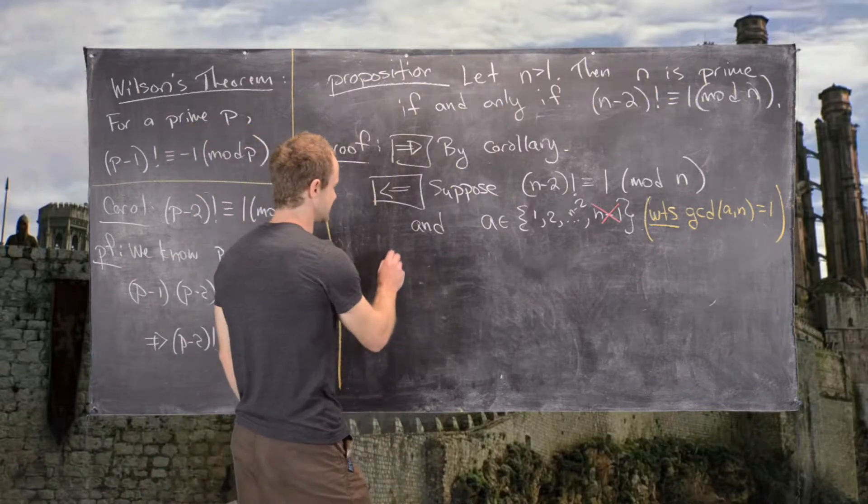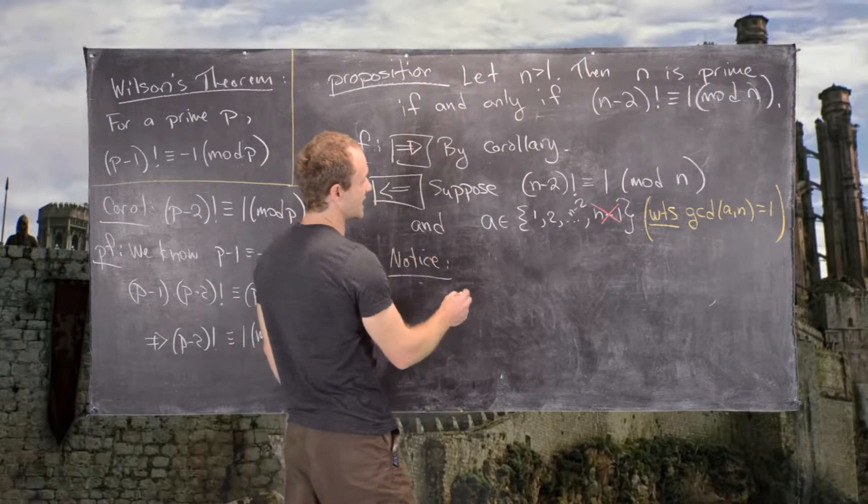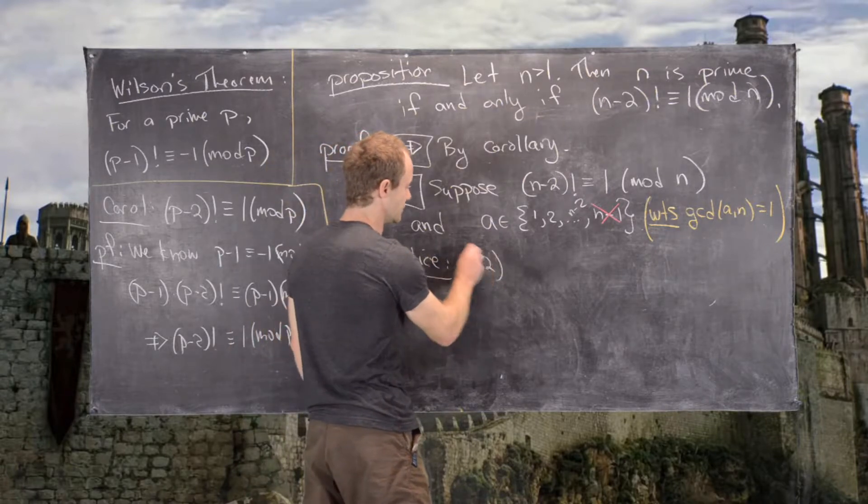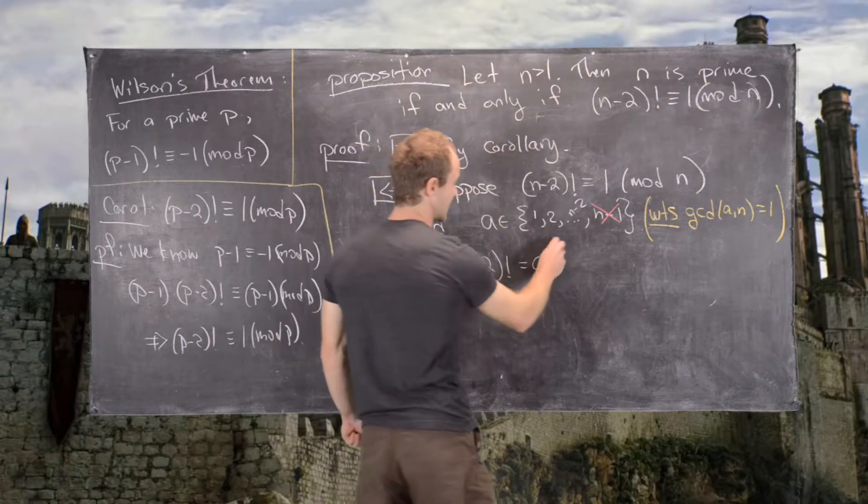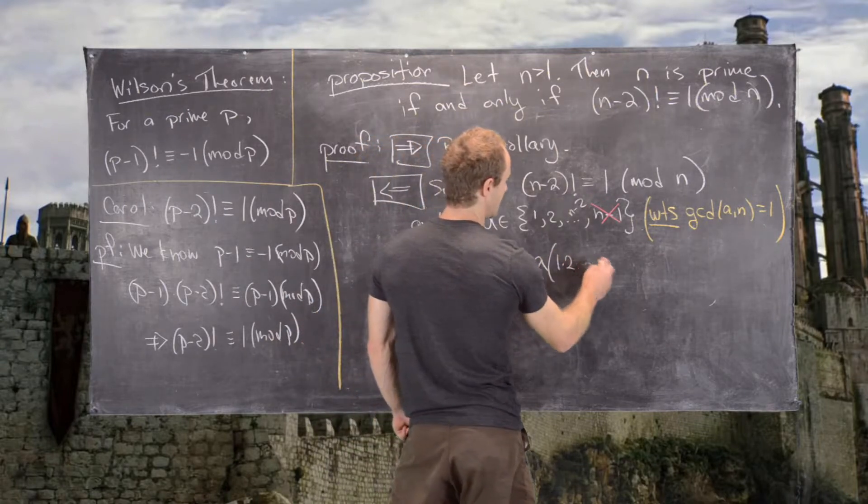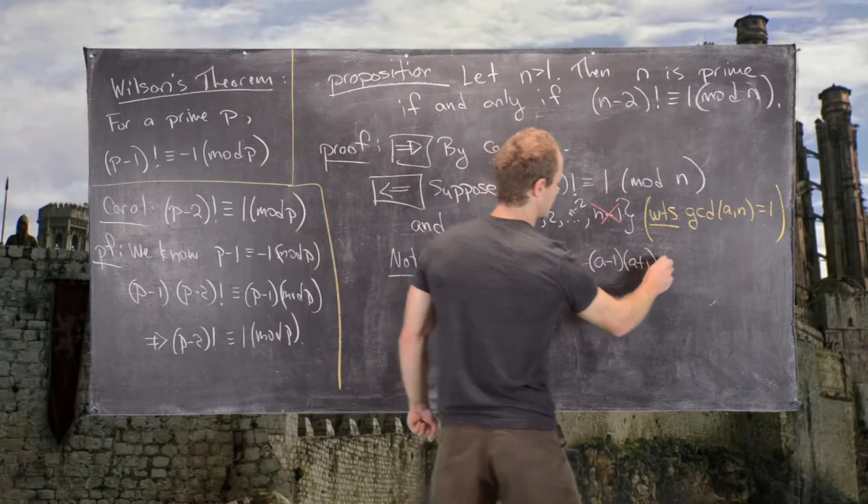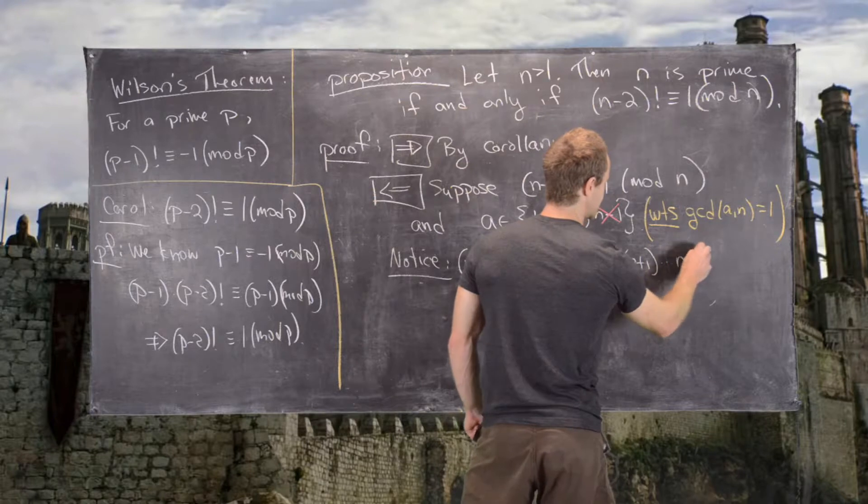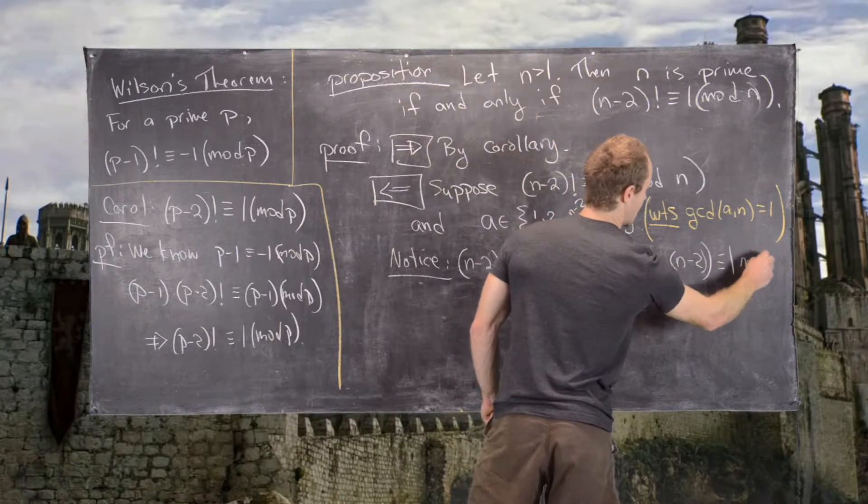Let's notice the following. We can write (n-2)! as a times 1 times 2 all the way up to (a-1) times (a+1) all the way up to n-2. And we know that is congruent to 1 mod n.